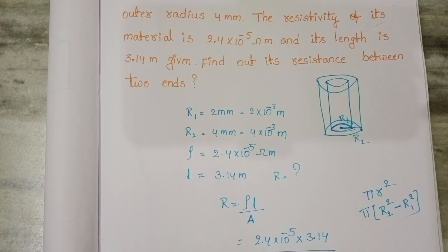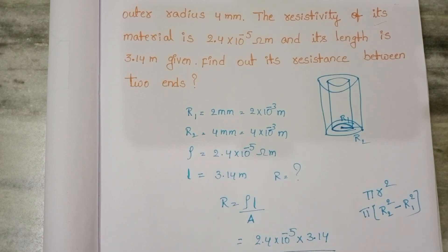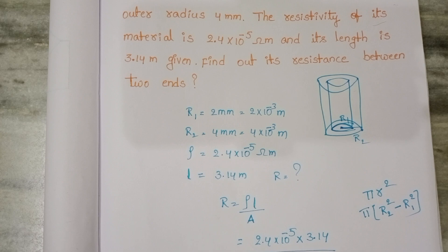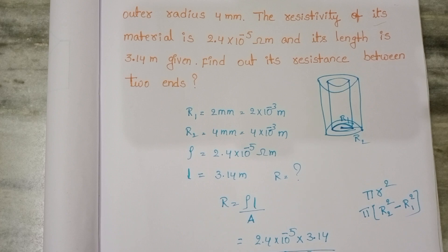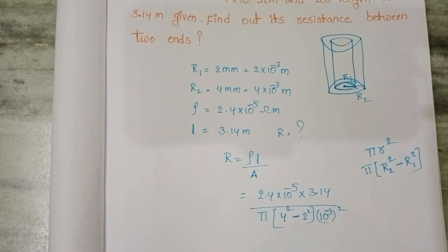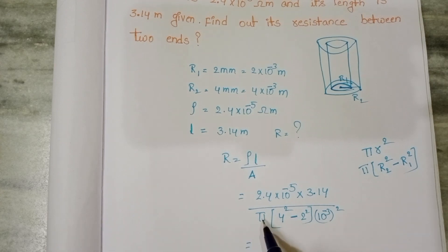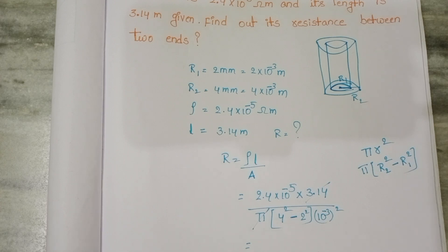Square of the outer radius minus square of the inner radius. π into R2: 4 × 10⁻³ whole squared minus 2² × 10⁻³ whole squared. Here take 10⁻³ common. π equals 3.14, so these two get cancelled.